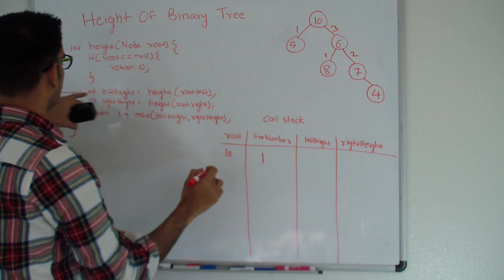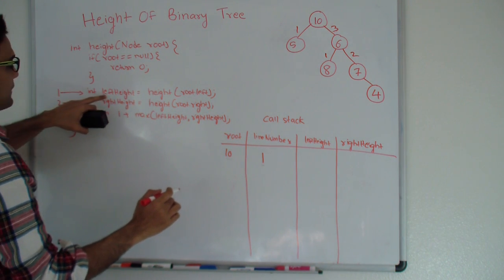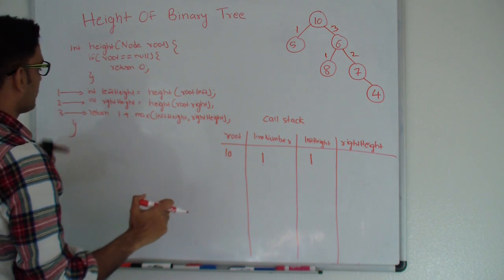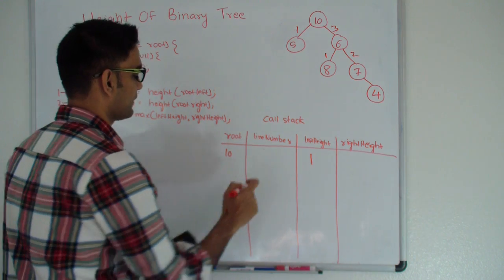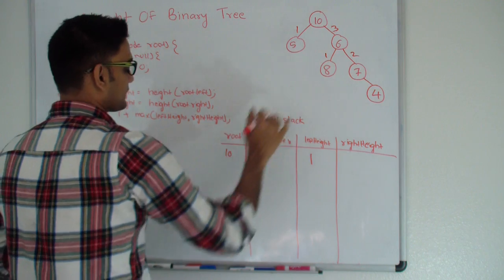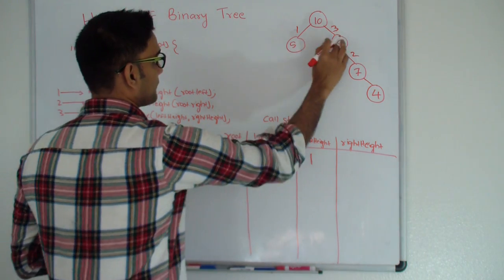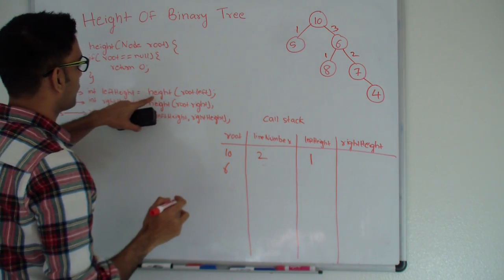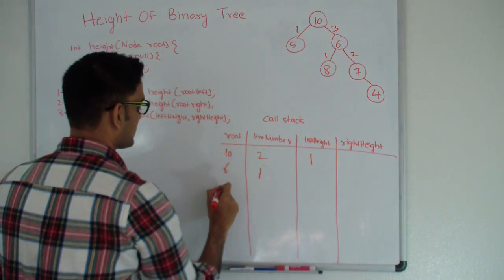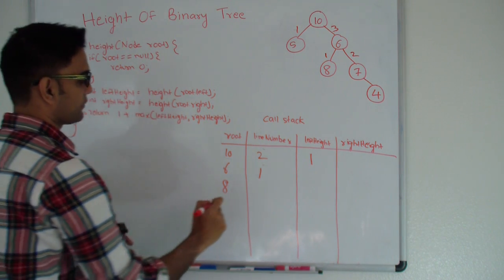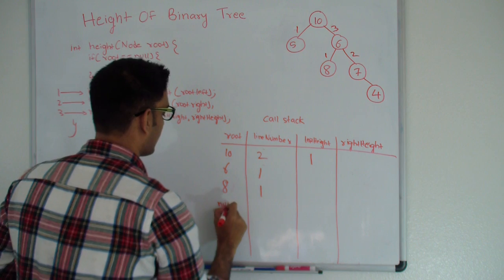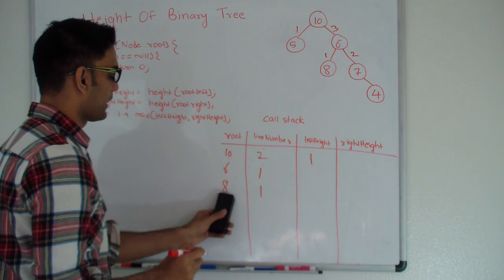Left height for 10 is set to 1 and we are done with line number 1. We execute line number 2 for 10 and it goes into recursion for the right side, giving us node 6. 6 is not null, so 6 goes into recursion from line number 1 for its left child which is 8. 8 is not null, so 8 goes into recursion from line number 1 with its left which is null.